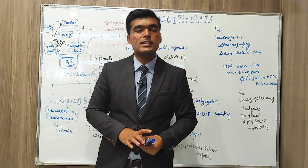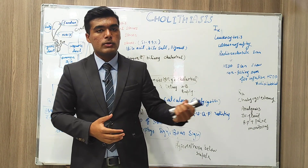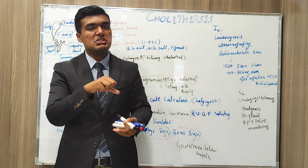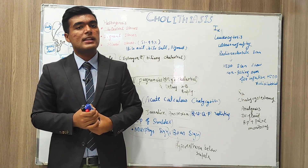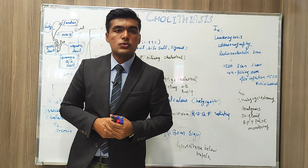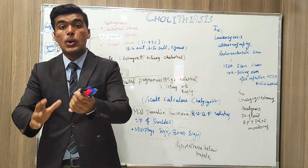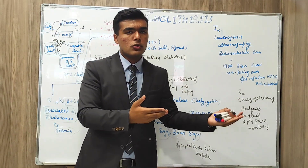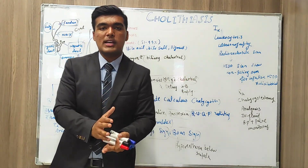In treatment, cholecystectomy is performed. For patients unable to tolerate anesthesia, we pass a catheter to reduce inflammation by aspirating secretions. Analgesics, IV fluid, and monitoring of BP, pulse, and vitals are used to manage the patient. Antibiotics include cefoxitin. Complications include cholangitis, empyema — which is development of pus in the gallbladder — perforation, and gangrene. Cholecystectomy can be laparoscopic or open, depending on condition severity.